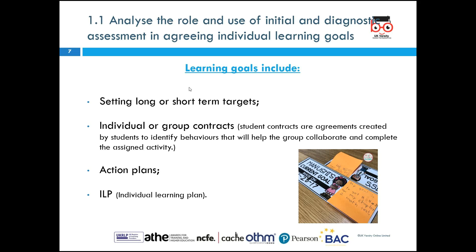Learning goals can include setting long or short-term targets — for example, 'I will be able to explain what happens in the story' or 'I will be able to use full stops and capital letters.' They can also involve individual or group contracts, where students make agreements about working together on a project and setting out tasks. With an individual contract, a student sets themselves a schedule of what they're going to do, identifying their own behaviours and tasks.